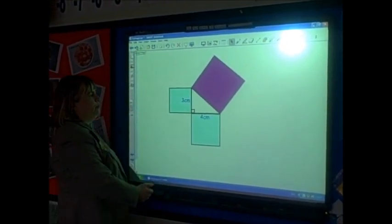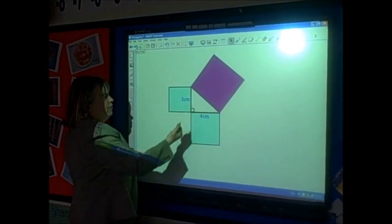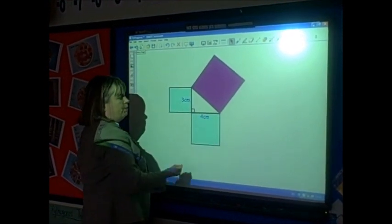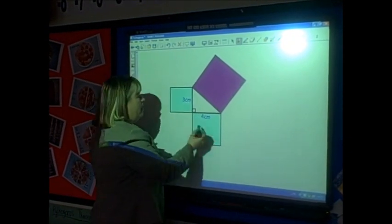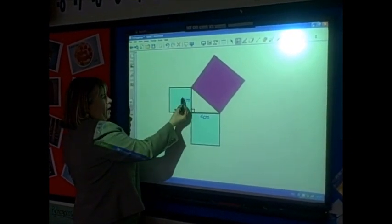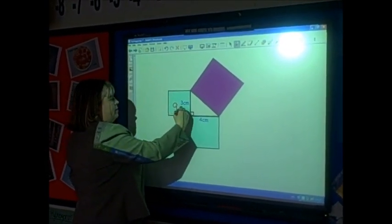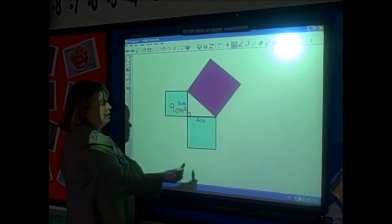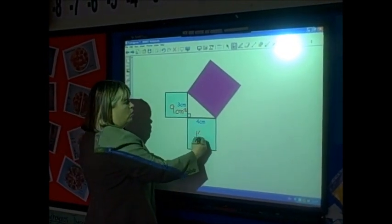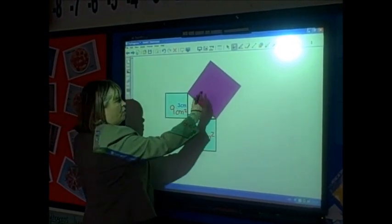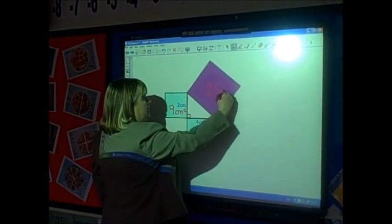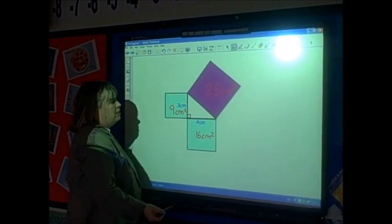For example, if I have a triangle with a height of 3 centimetres and a base of 4 centimetres, and I'm trying to find the length of that diagonal, I can find the area of the first square. 3 times 3 gives 9 centimetres squared. 4 times 4 gives 16 centimetres squared. If I add those together, 9 plus 16 gives 25 centimetres squared.